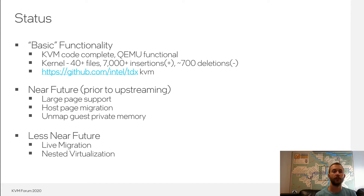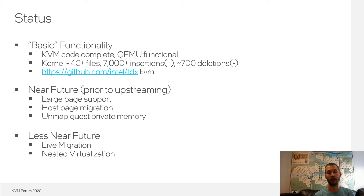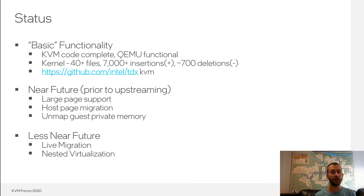In the near future, effectively prior to upstreaming, on our to-do list is large-page support, especially 2-meg pages, host page migration, and the unmapping of guest private memory. Longer term, our top priority is live migration, and we also have line-of-sight to nested virtualization — nested in this case meaning nesting legacy VMs inside trust domains. We are not planning on supporting trust domains nested within other trust domains.